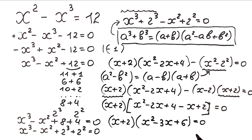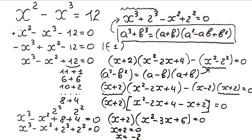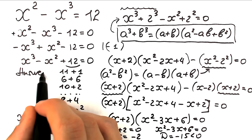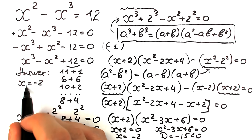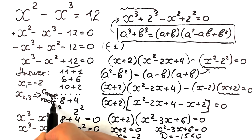Now we have a product equal to zero, so each factor can equal zero. From x + 2 = 0, we get x = -2. From x² - 3x + 6 = 0, I feel the discriminant will be negative — probably -15 — which is less than 0. So this gives us two complex roots. Our answer: x₁ = -2, and x₂, x₃ are complex roots.